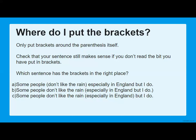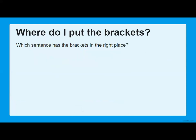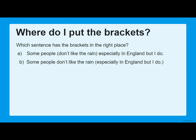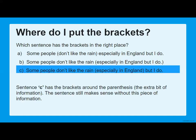Welcome back. Well done if you identified that it was C. Let's look at A — taking the bracketed information out gives us: 'Some people, especially in England, but I do.' That doesn't make sense on its own. Now let's look at B: 'Some people don't like the rain' does make sense on its own, but the bracketed section 'especially in England, but I do' contains two pieces of parenthesis. Another error in B is that the full stop at the end is inside the brackets, which is wrong.